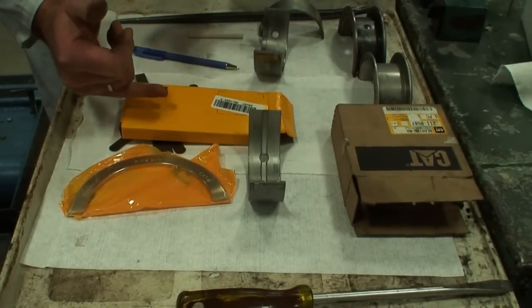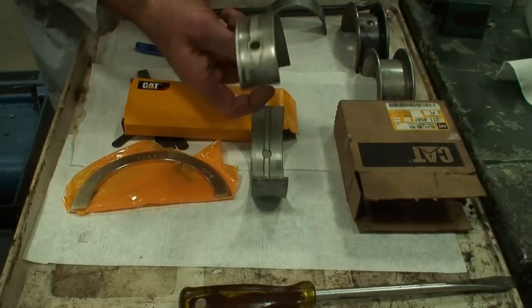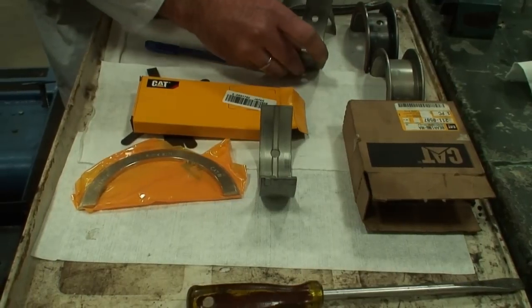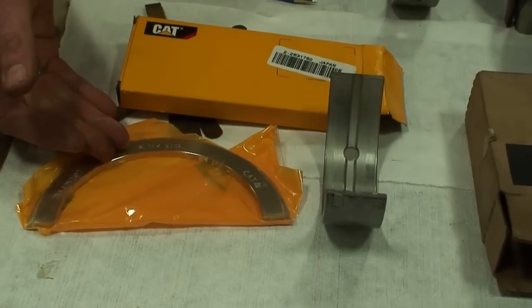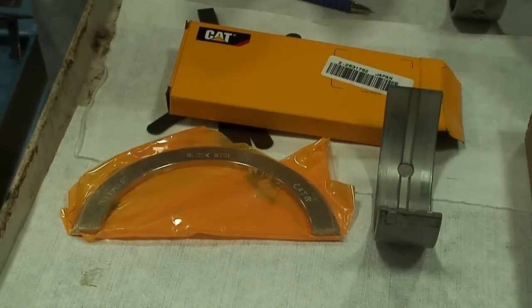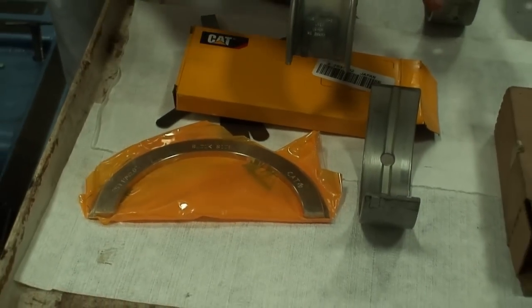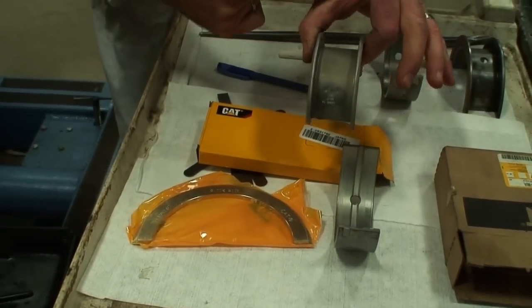Continuing on taking a look at a different style of bearing again, we have a split shell bearing, the upper and the lower, two different applications like I gave previous instruction on. But we also have something here that this manufacturer has used to control the end float. On the other bearings, we have a thrust flange on the bearing, and it's part of the split shell. This one is just a split shell.